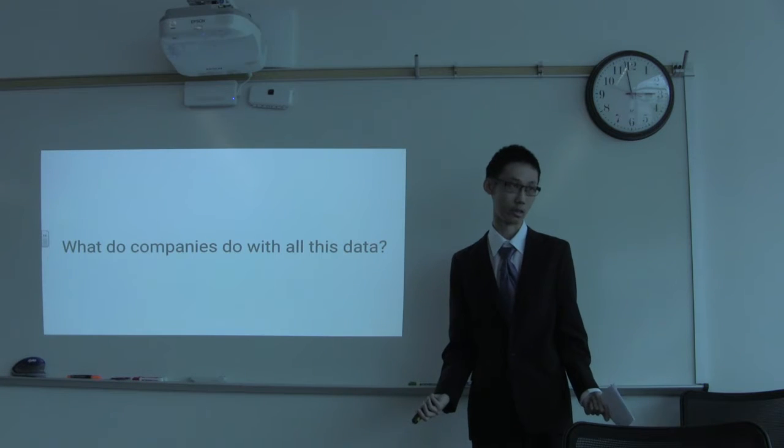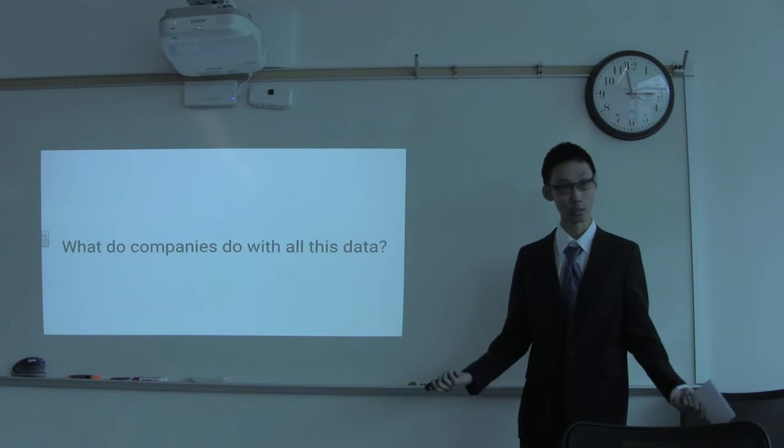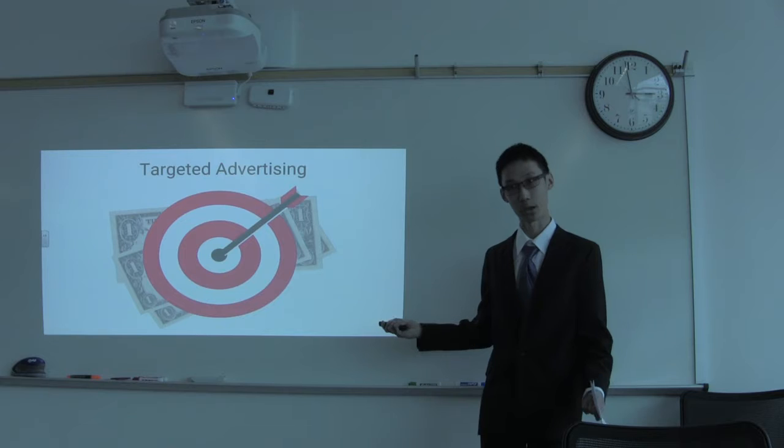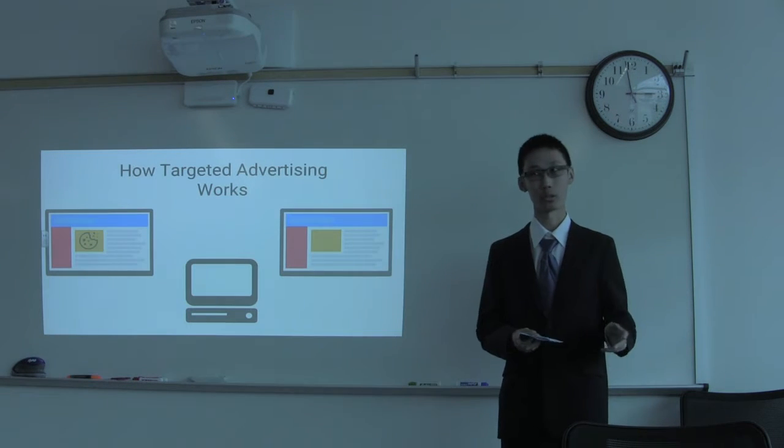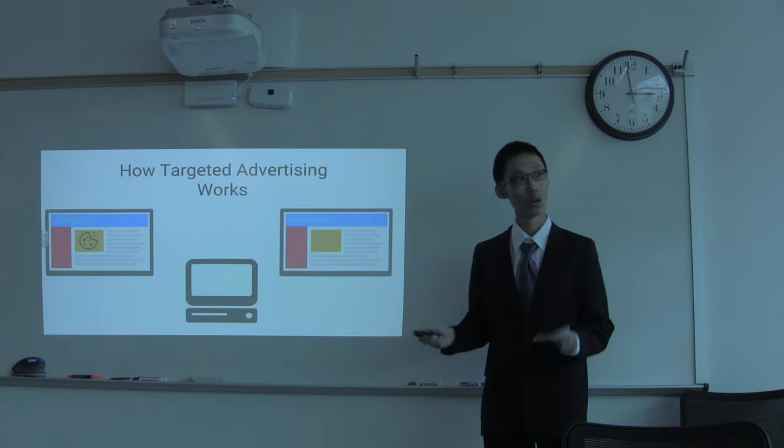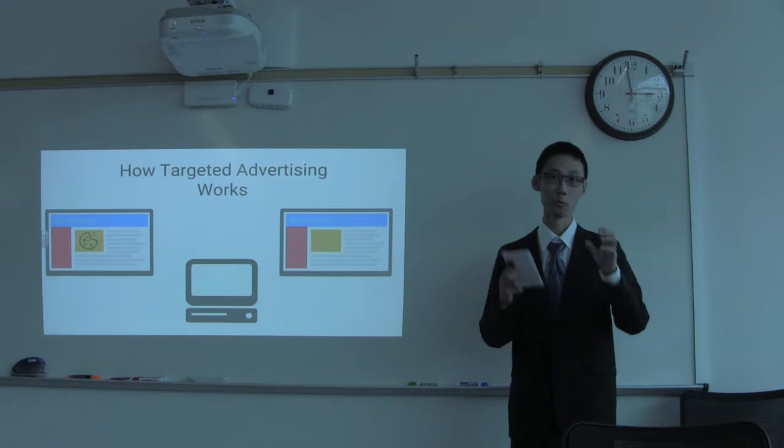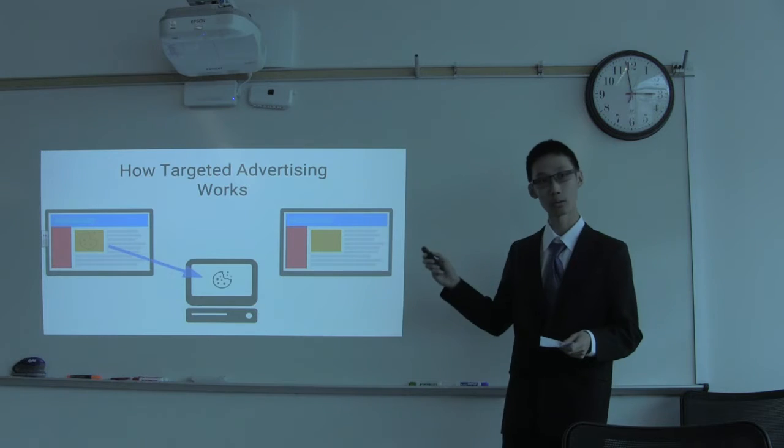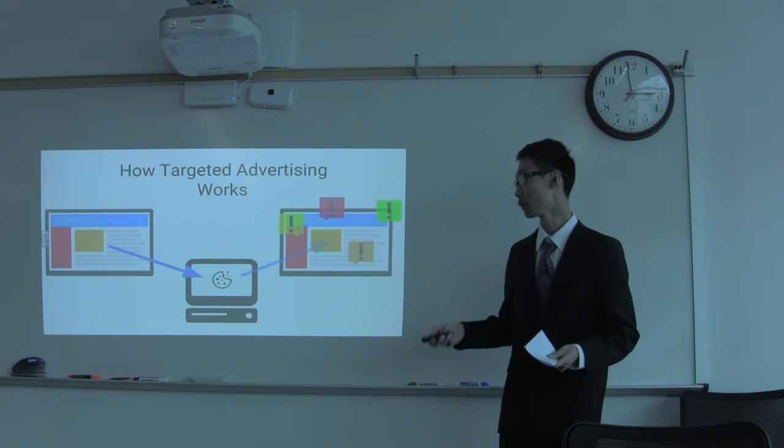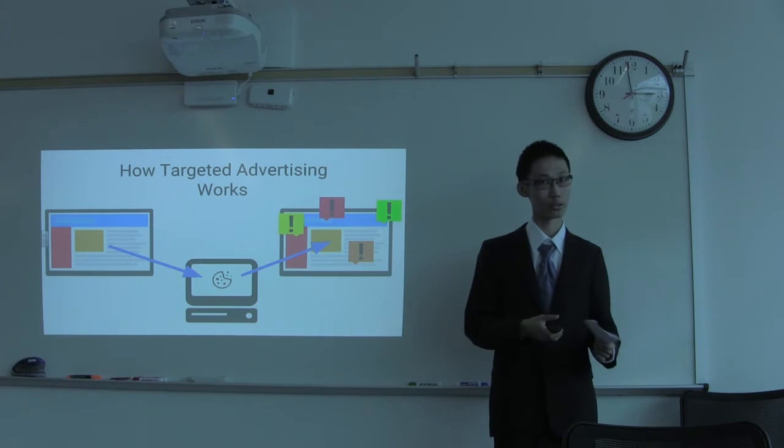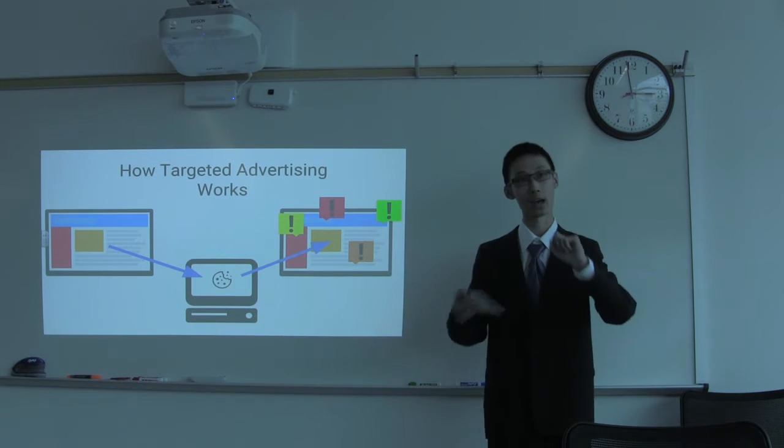And so what do companies do with all this data? Now that we know how they did it, what do they do? First of all, targeted advertising. So let's go back to the example I mentioned earlier. So this is how targeted advertising works. A website has a cookie from an advertiser. This cookie is then downloaded onto your computer with information about what you clicked on the website and what you like. Then whenever you go to another website from that advertiser, the cookie will then inform what kind of ads to give you.